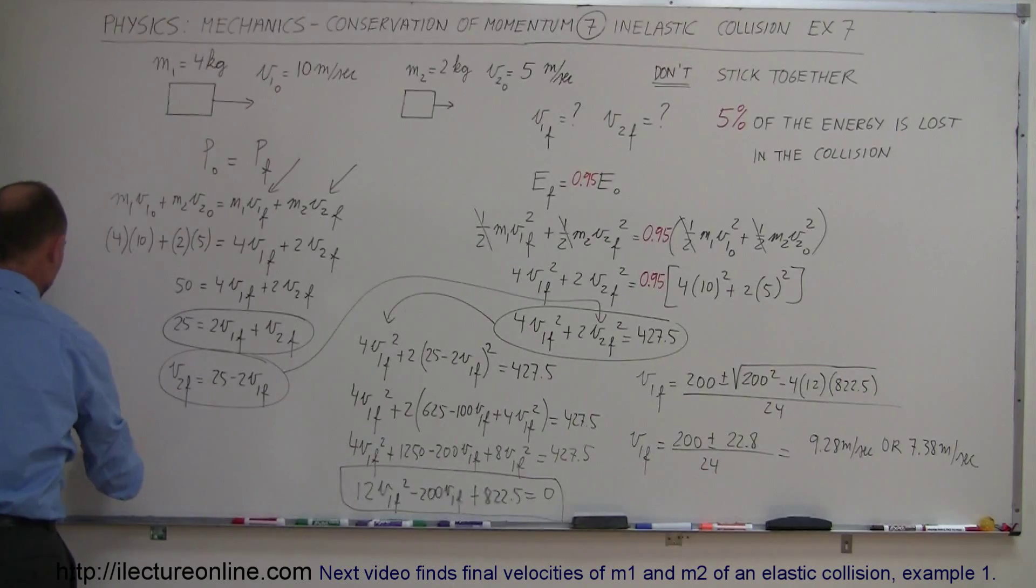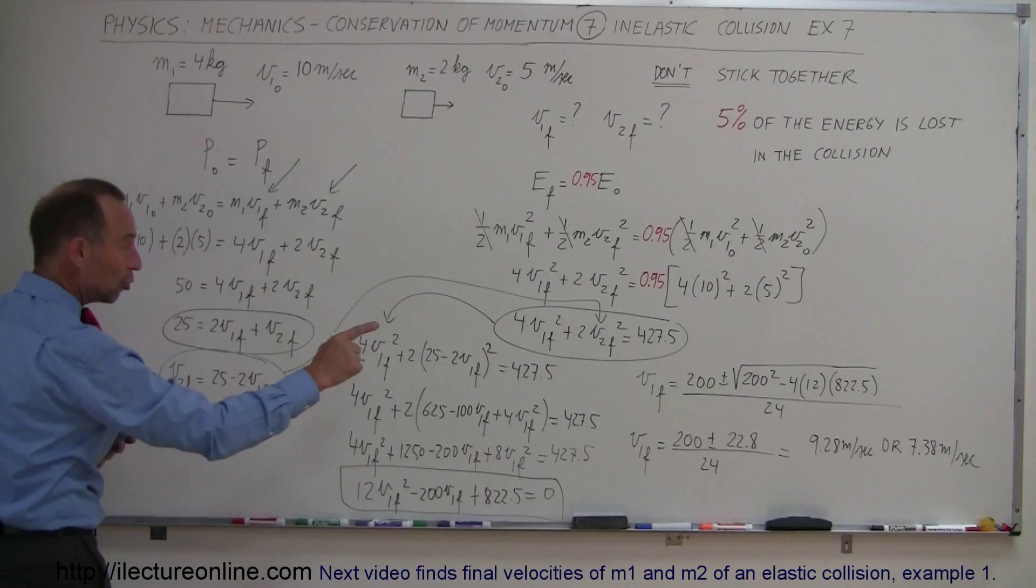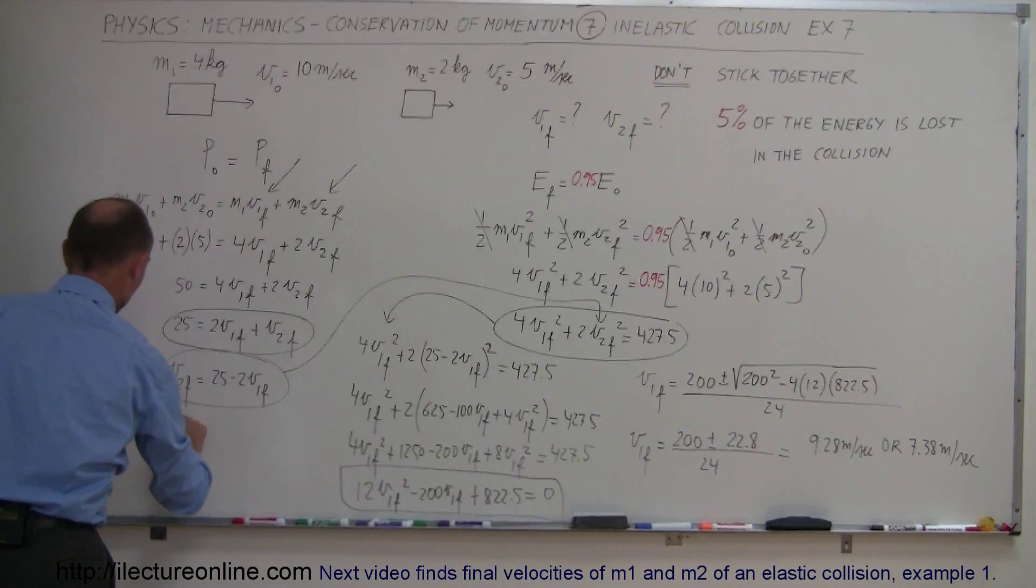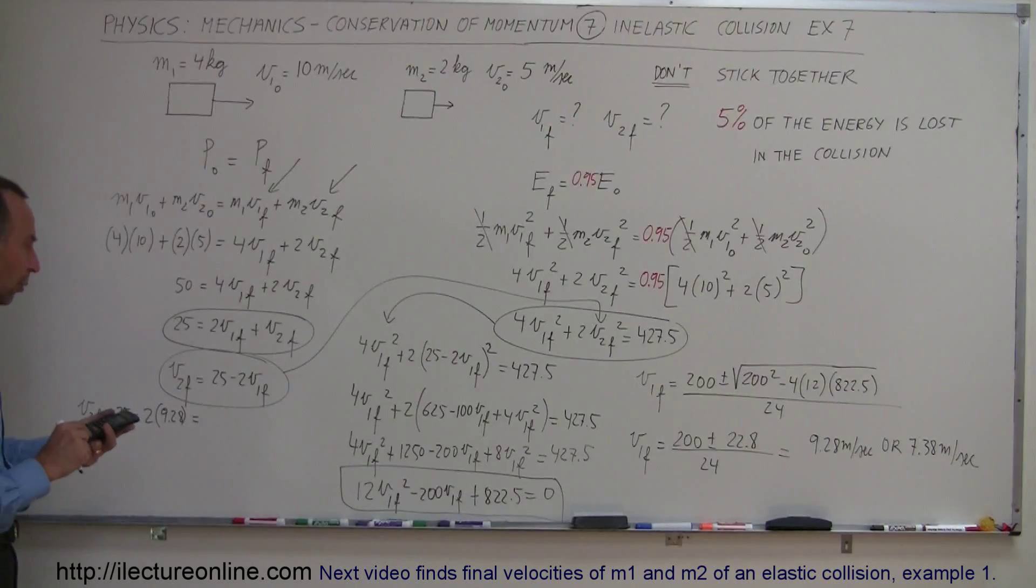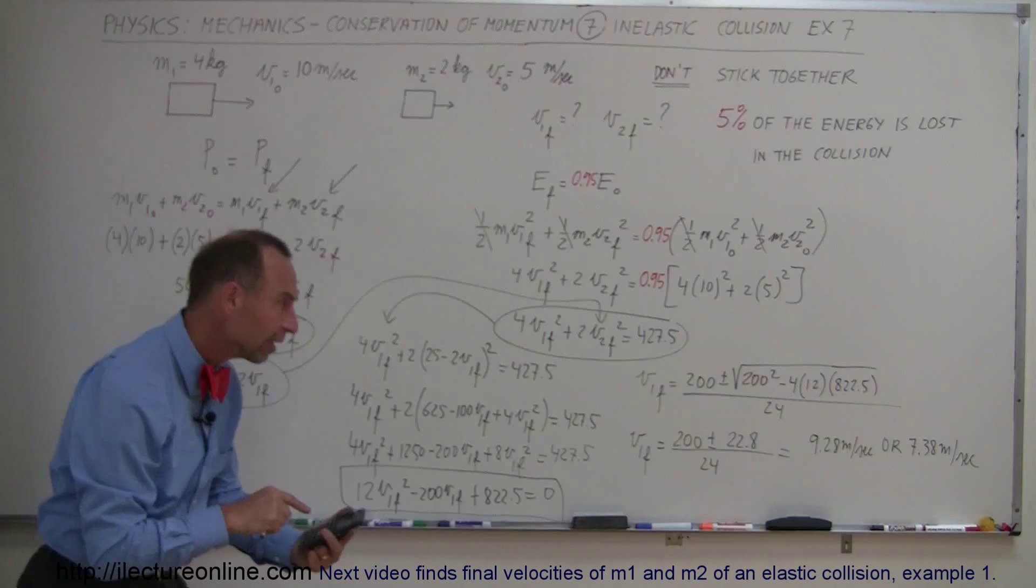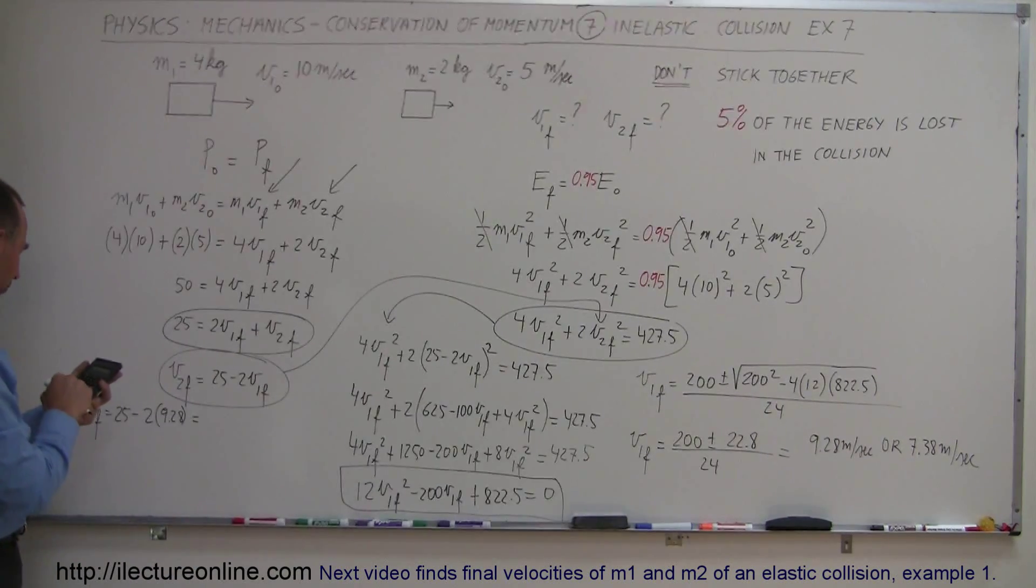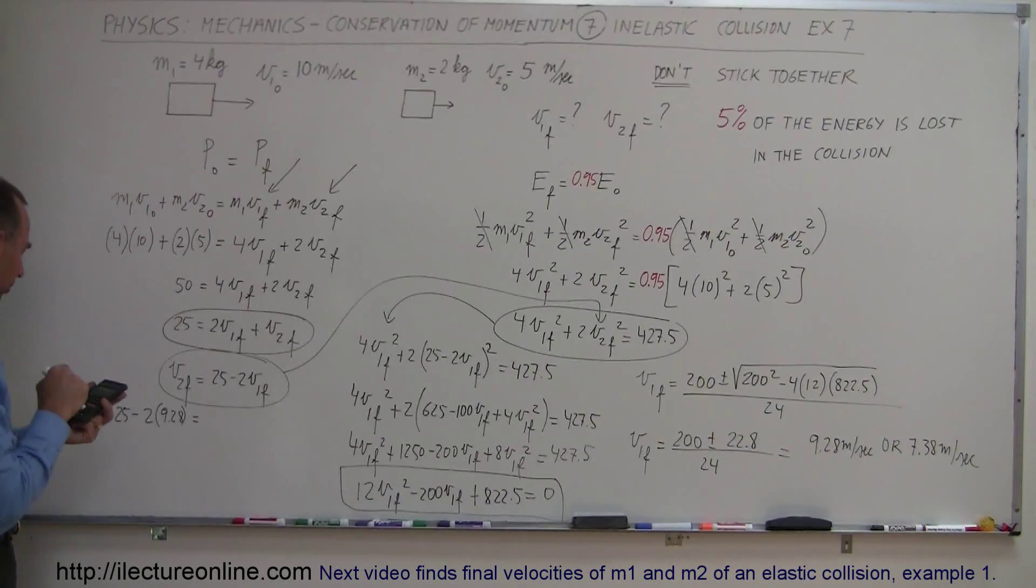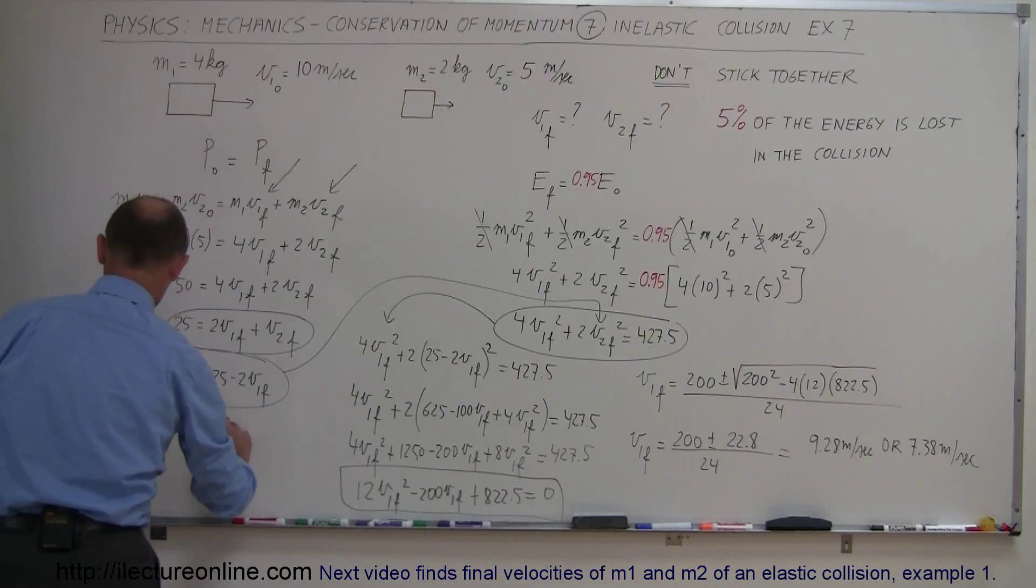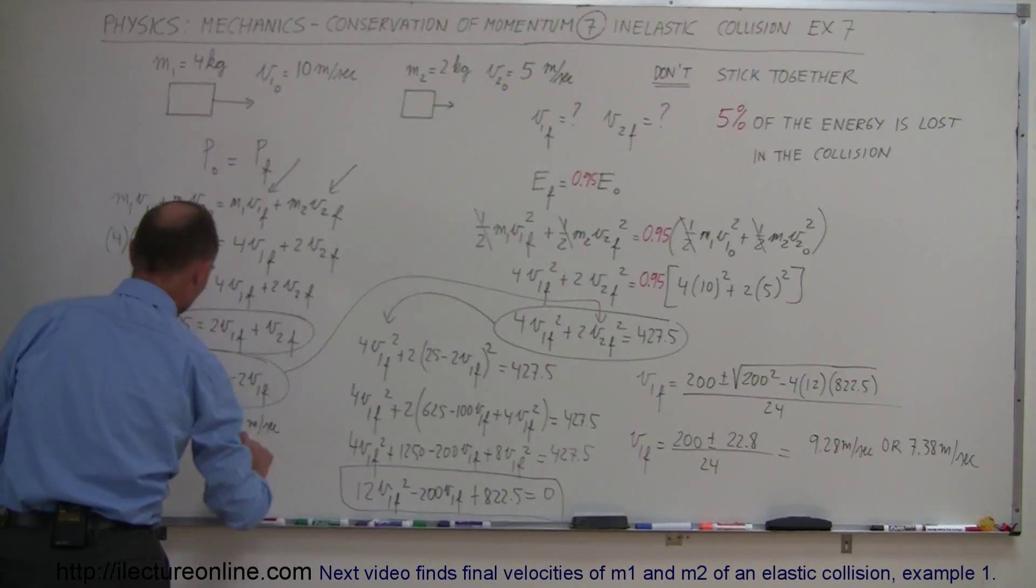All right so V2 final is equal to 25 minus 2 times, let me use the first answer 9.28. So 25 minus 2 times 9.28 equals, so V2 final will be 6.44 meters per second.